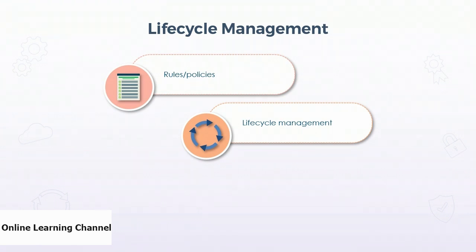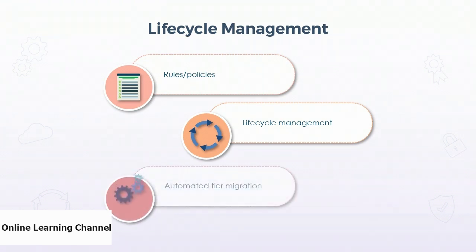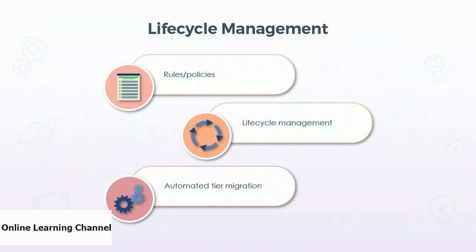Lifecycle management can also automate data moving through the access tiers. Data in the hot tier can be automatically moved to cool if it has not been accessed in a defined period, or moved from cool to hot if it has been accessed. Data can also be marked as archival and moved into the archive tier when access requirements have been met.